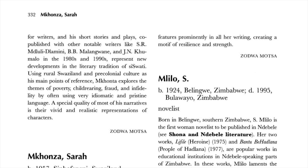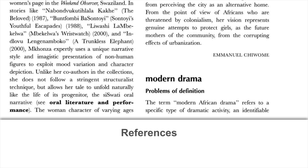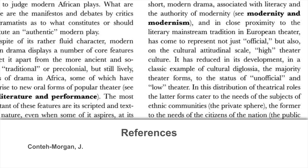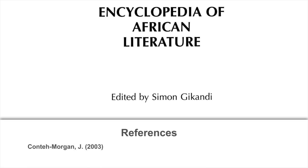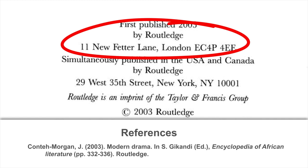Now for encyclopedias. Usually encyclopedias are compiled and edited by editors with various expert contributors writing the different sections. The entry in the reference list will look like that of a chapter in a collected work. The author who wrote the article about modern drama is J. Conte Morgan. The date of the encyclopedia is 2003. The editor of the Encyclopedia of African Literature is S. Gikandi. The page numbers of this article are pages 332 to 336, published by Routledge. Note that the place of publication is not mentioned in the entry.